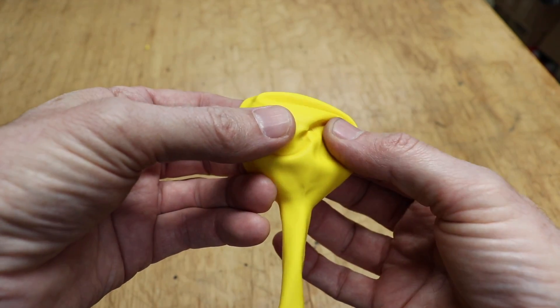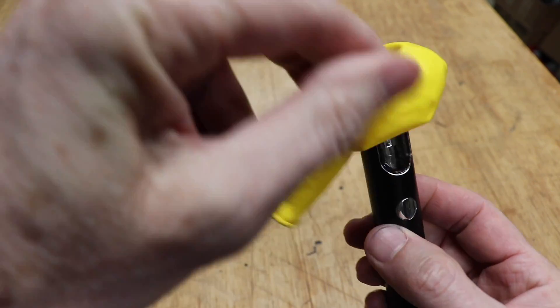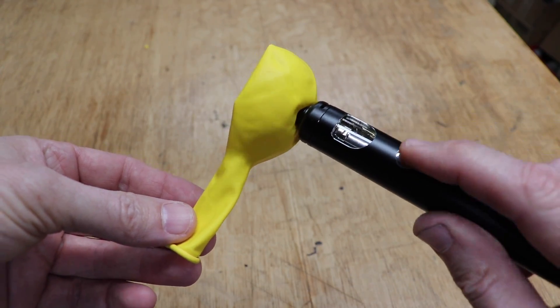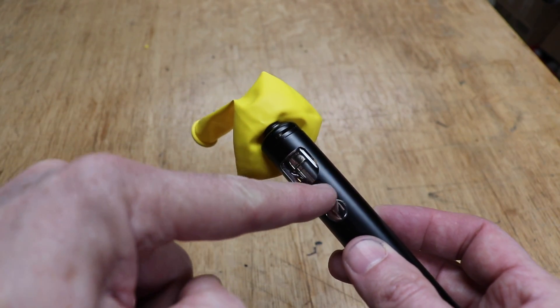Now slide the balloon back and forth until you have the two holes lined up. Take the vape pen and push the mouthpiece through both holes, and make sure that the opening of the balloon is aligned with the power button. Now pull the balloon down on the other side until it's just past the tank.